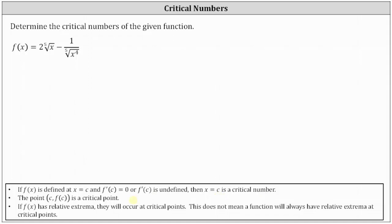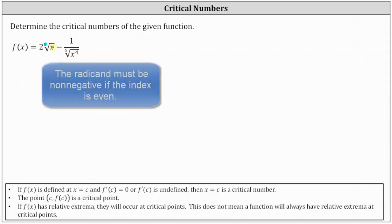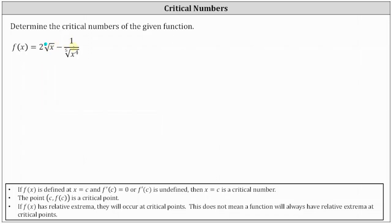The first step in determining the critical numbers is to determine the domain of the given function. Because the index of the radical is odd — meaning here we have the fifth root of x — the radicand x can be any real number; it does not have to be non-negative. So there's no restriction on two times the fifth root of x. But notice we have minus one divided by the fifth root of x to the fourth, and since division by zero is undefined, we must exclude x equals zero from the domain.